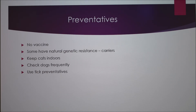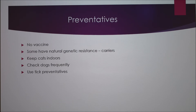Since there's no vaccine, it's best to keep cats indoors or use tick preventatives like collars. Also, since dogs can carry ticks, it's best to check dogs and prevent ticks on them too so they don't give the cats ticks. Some cats are also just genetically resistant, but they can still become carriers if they get bitten.